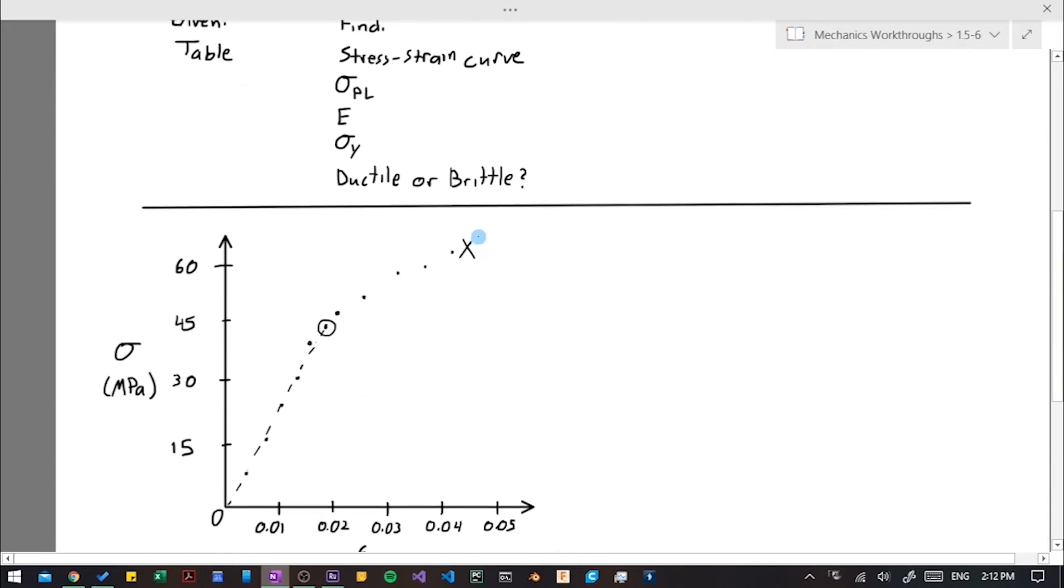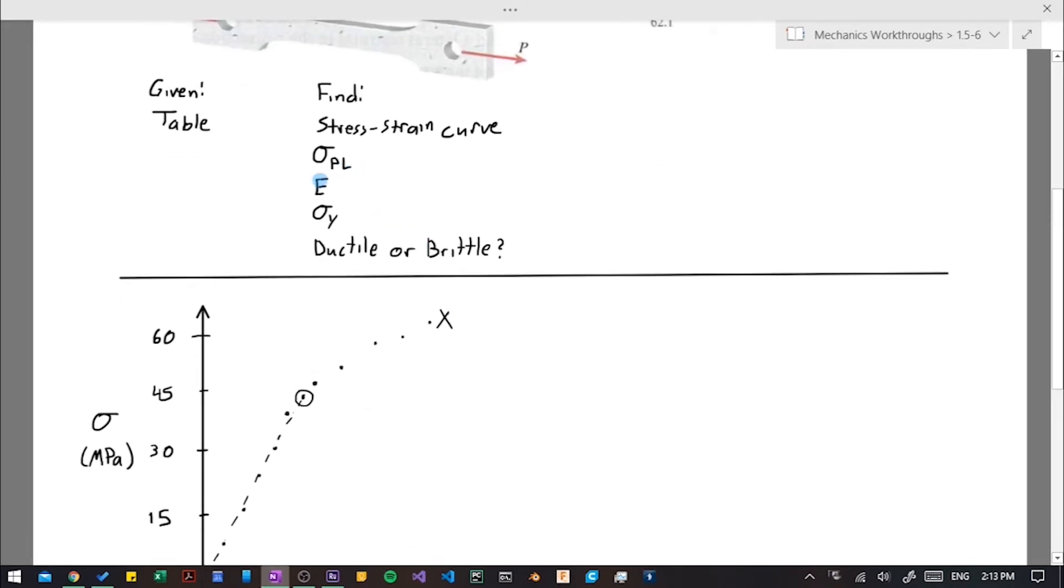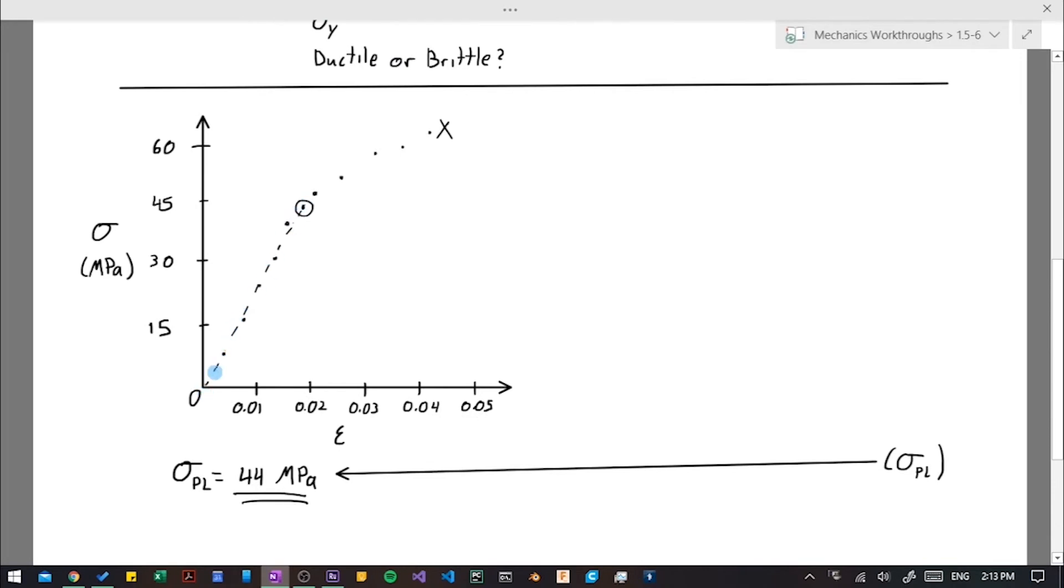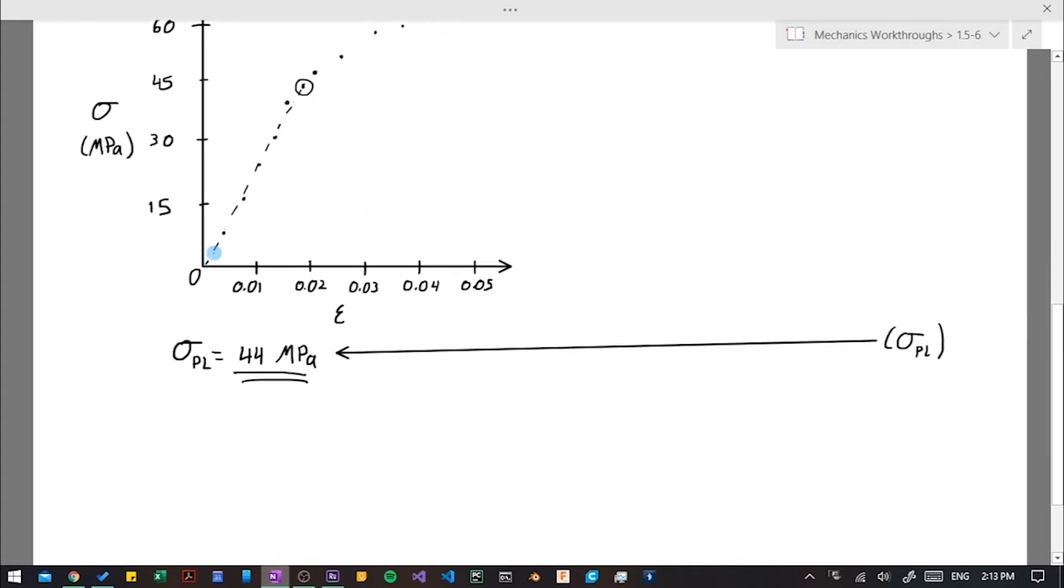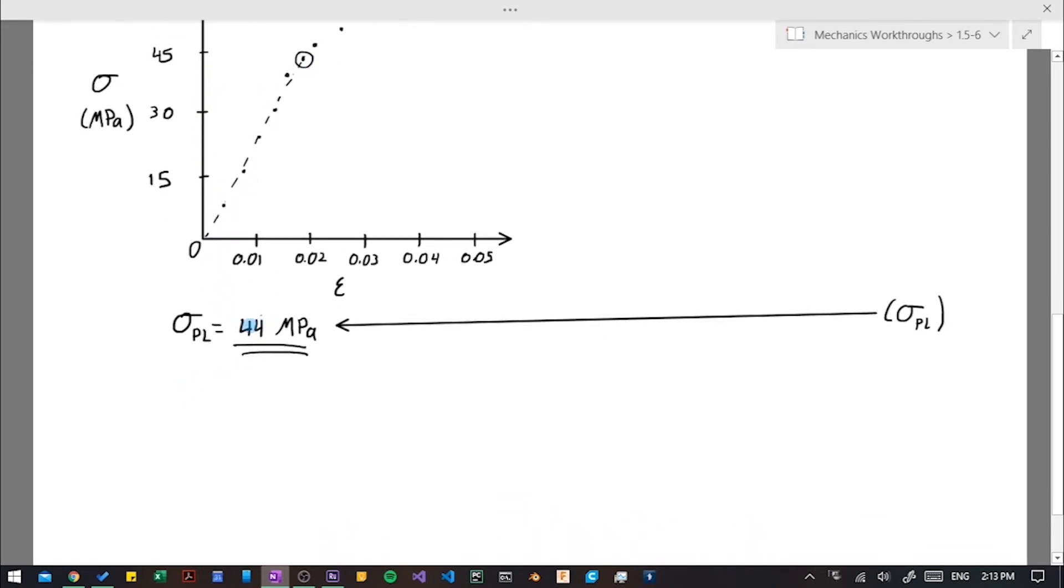And the next thing we need to find is our modulus of elasticity, which is the slope of this line. And since this line always goes through the origin, then we can just use this point here, the end of the line, and use that to find the slope. So remember the slope is rise over run. So that's going to be our stress over strain. And if you remember, that's the equation for E. It is the stress over strain.